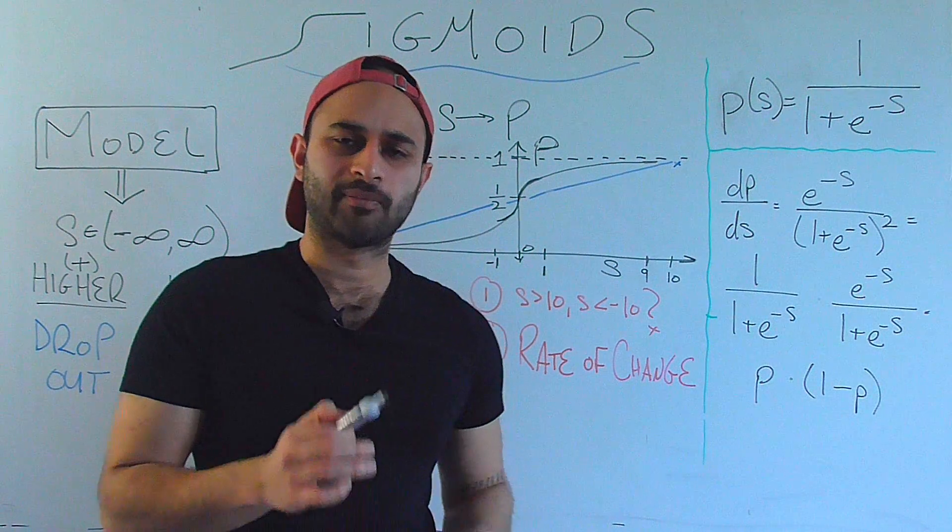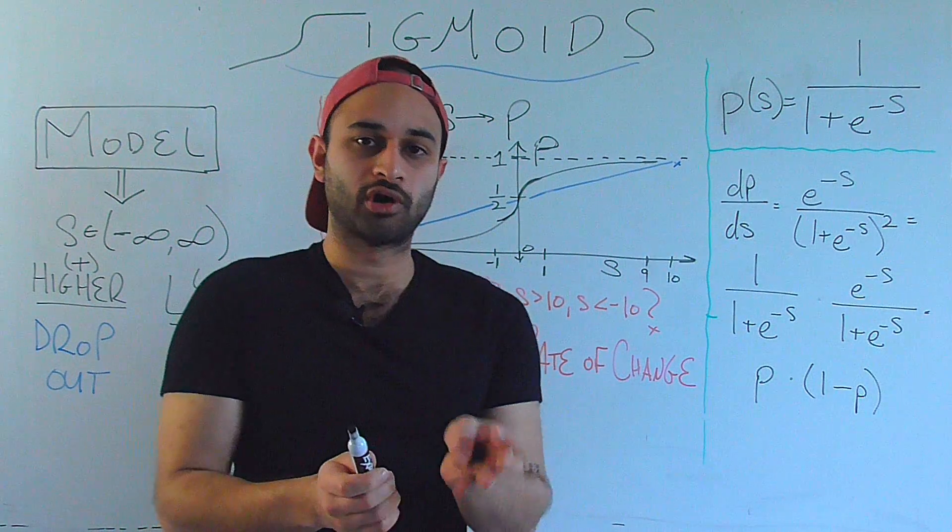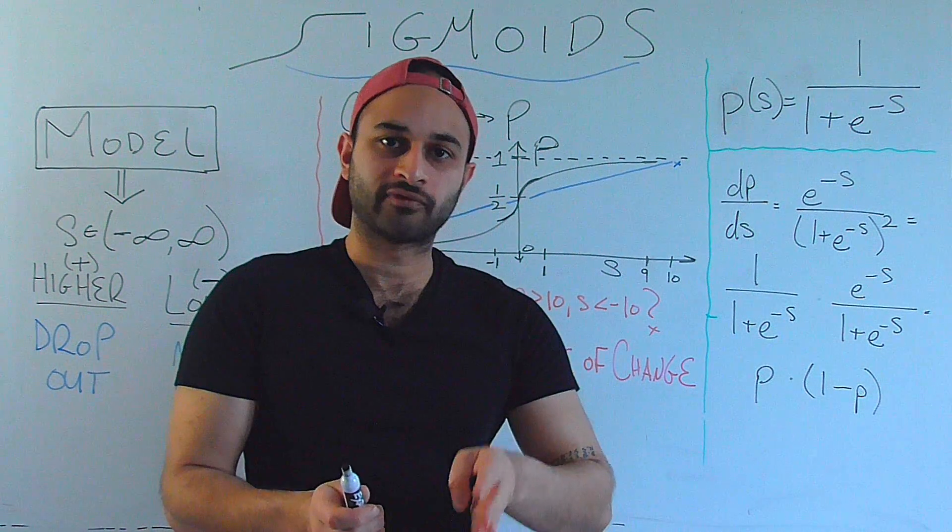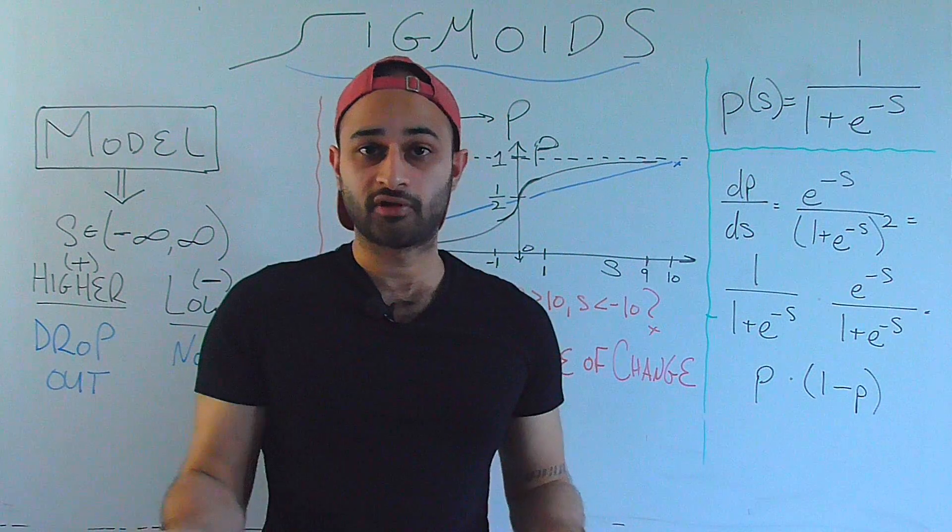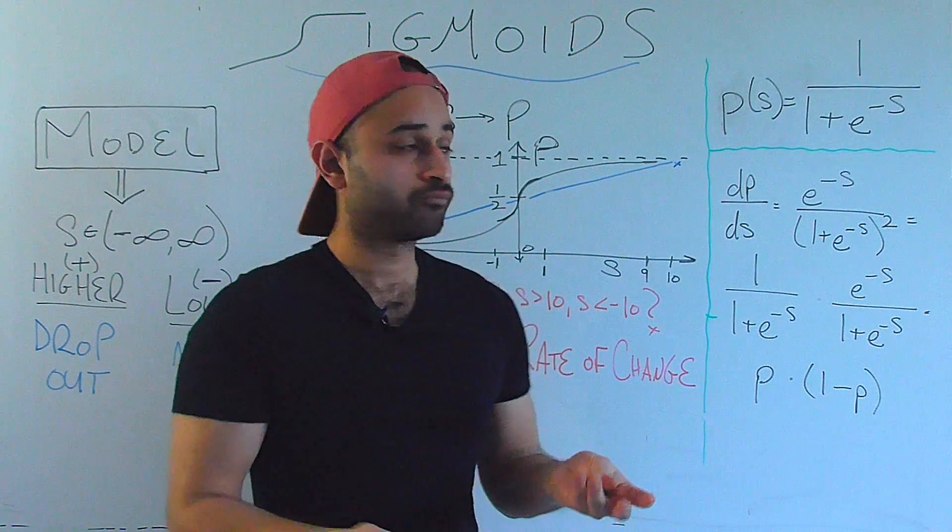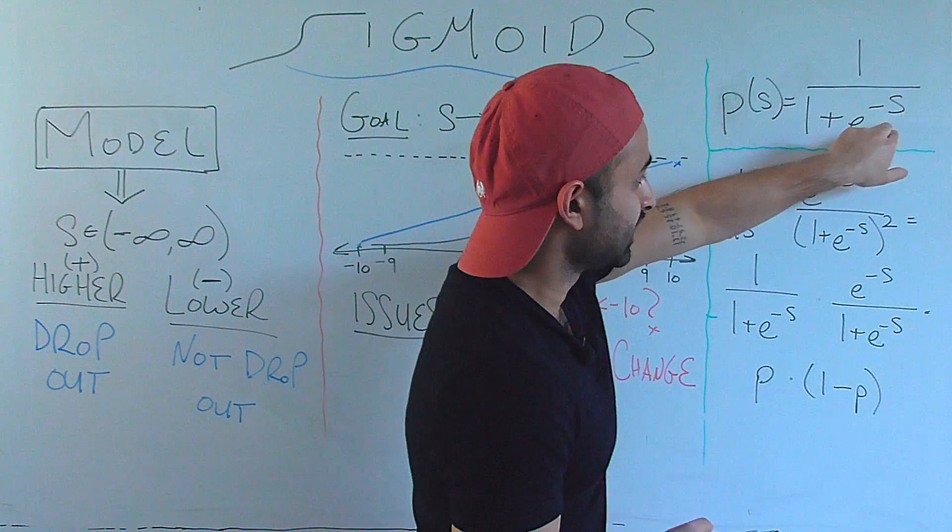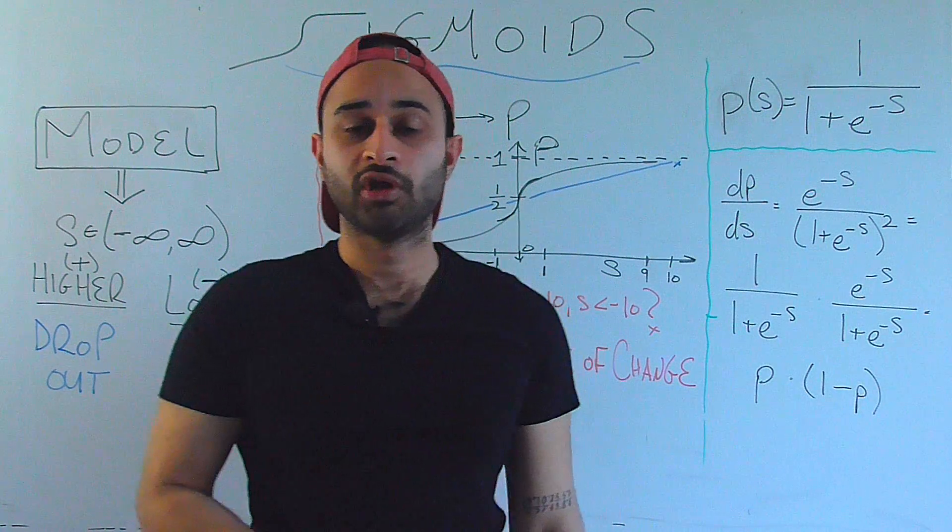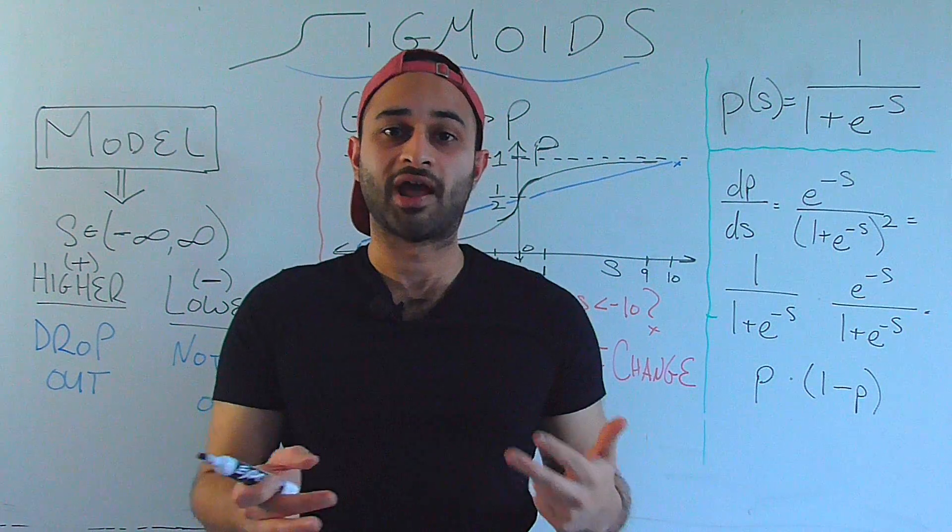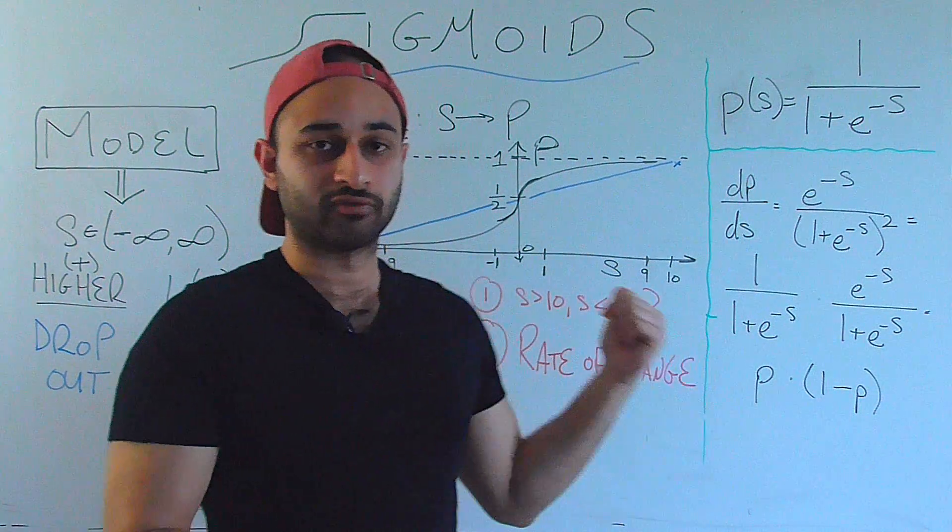And the last sanity check is if I plug in s is equal to 0, so the score is exactly 0, meaning I have no information one way or the other, the probability should be 1 half. Indeed if I put in 0 in s, I get 1 plus 1 on the bottom, so the entire fraction becomes 1 half. So that is the correct formulation for this curve.